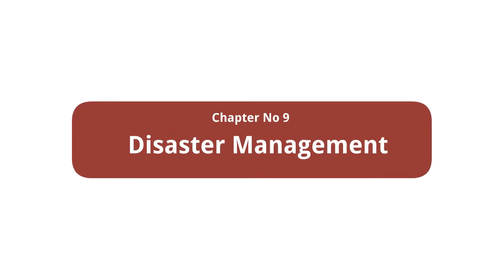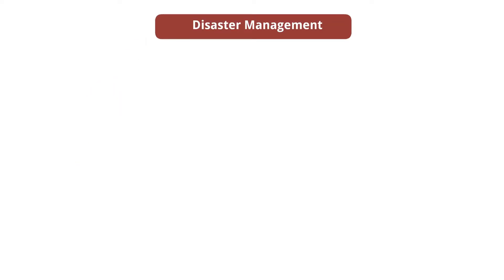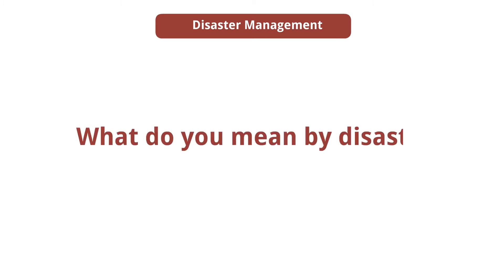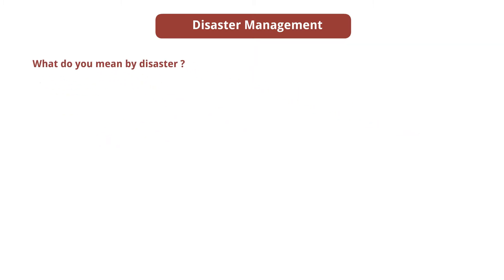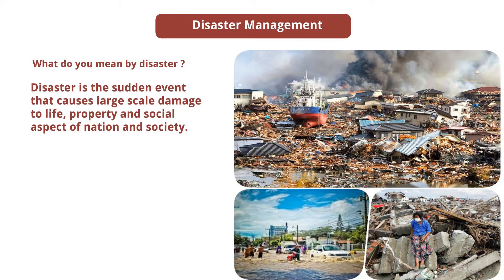Today, we are going to start with Chapter No. 9 of Science, i.e., Disaster Management. First of all, we will study: What do you mean by disaster? Answer: Disaster is the sudden event that causes large-scale damage to life, property, and social aspect of a nation and society.